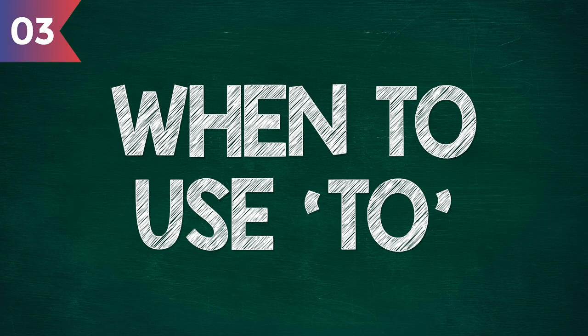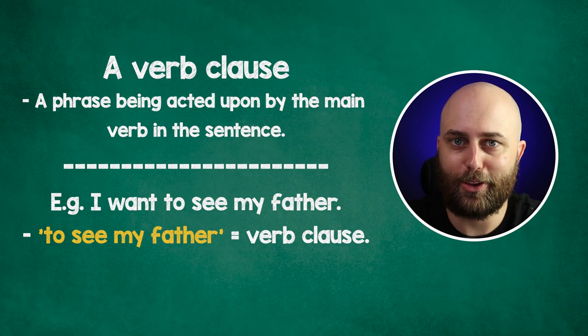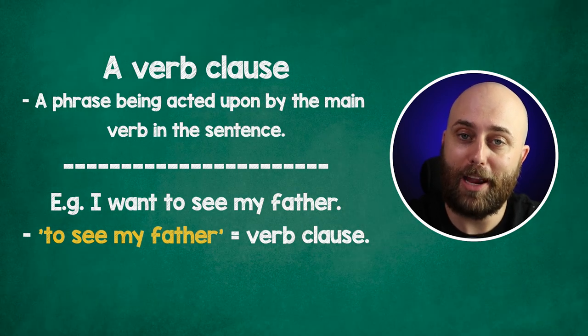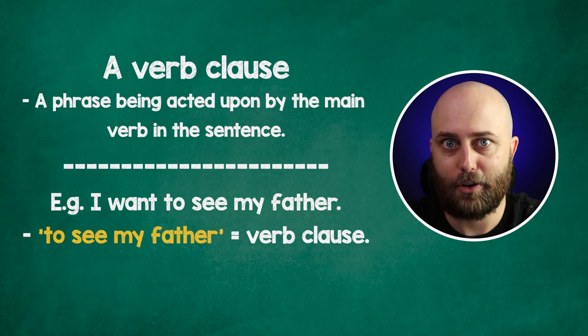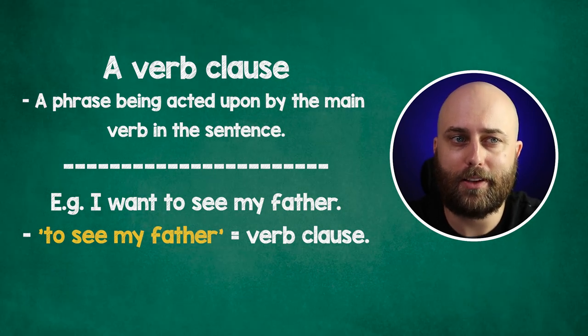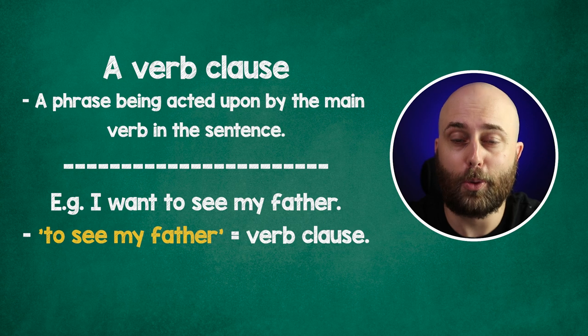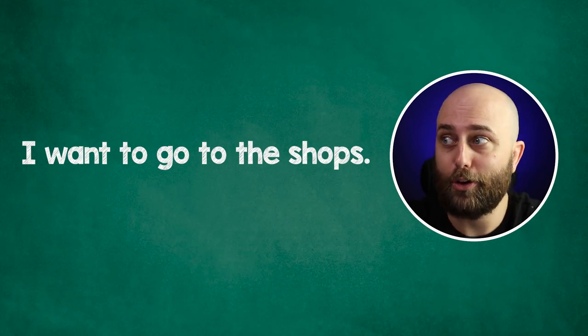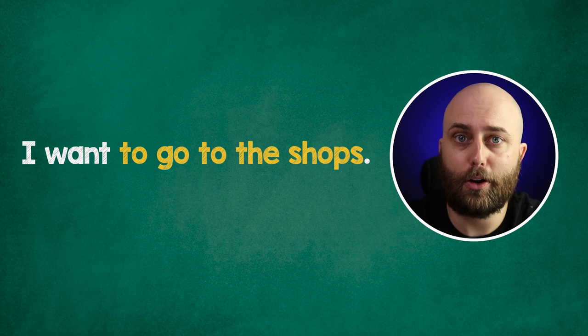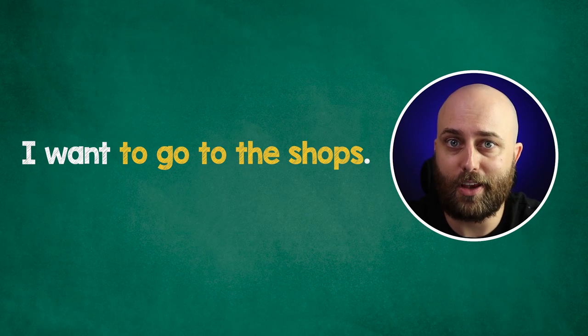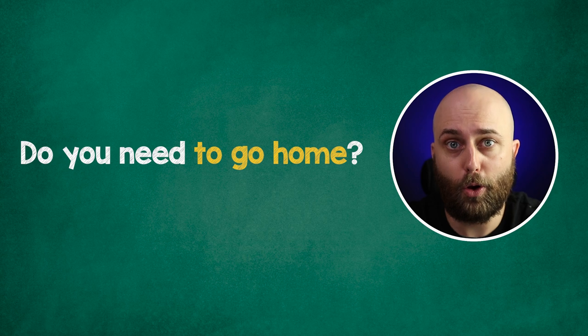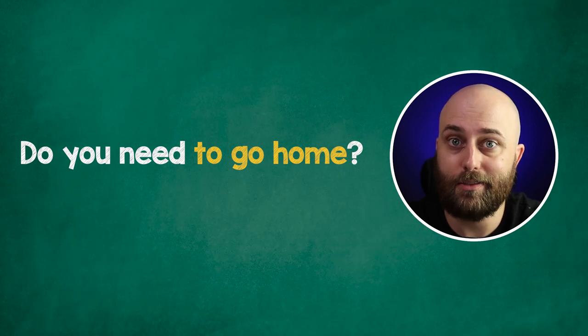Part three: when to use 'to.' We use 'to' after certain verbs to replace a verb clause — a clause that includes a verb that the main verb in the phrase is acting on. In layman's terms, 'to' is just replacing the rest of the phrase following the main verb. For example: 'I want to go to the shops' — 'to go to the shops' is the verb clause — you can just say 'I want to.' 'Do you need to go home?' — 'to go home' is the verb clause — you can just say 'do you need to.'